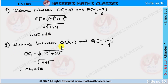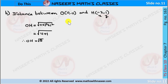The distance OG = √((−2)² + (−1)²) = √(4 + 1) = √5. Next, the distance OH with x = −2 and y = 1: OH = √((−2)² + 1²) = √(4 + 1) = √5. So all eight points are equidistant from the origin at √5 units.